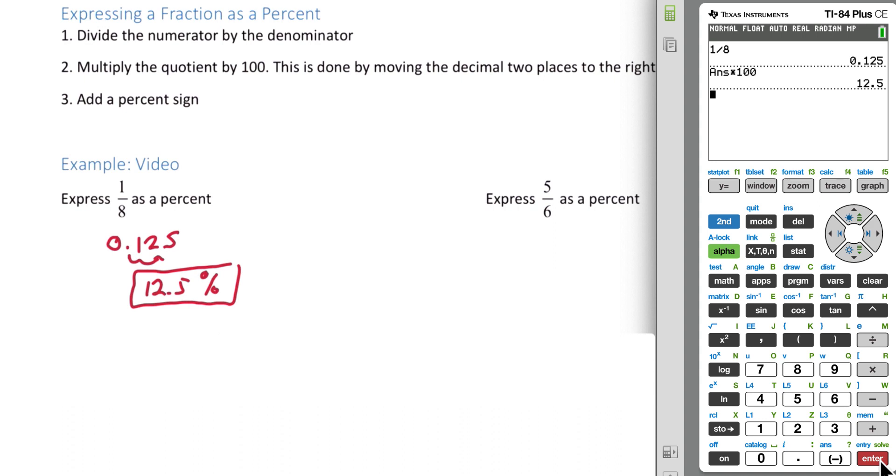In the next example, 5/6, we want to express that as a percent. Again, 5 divided by 6, we get 0.83 repeating.